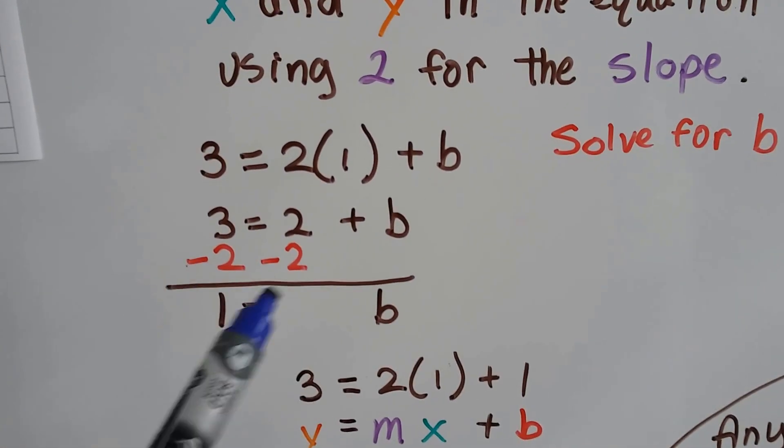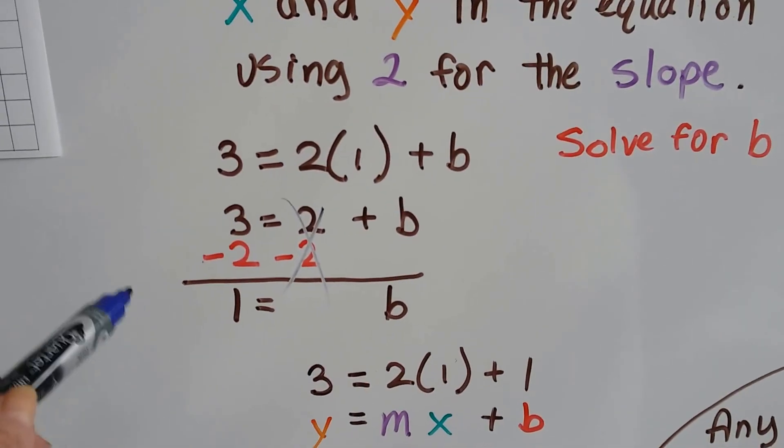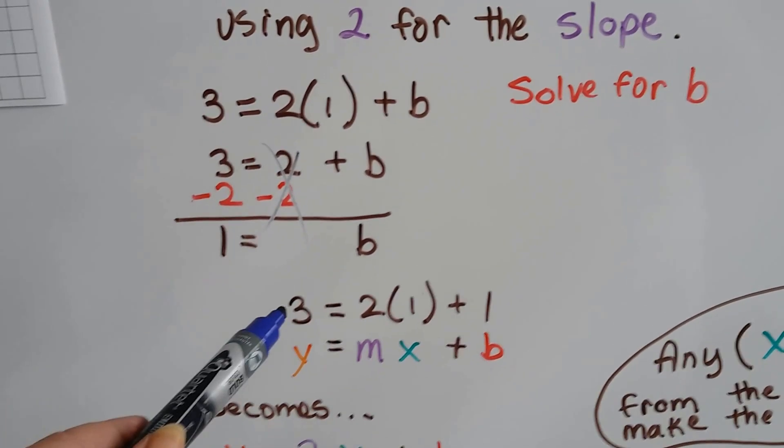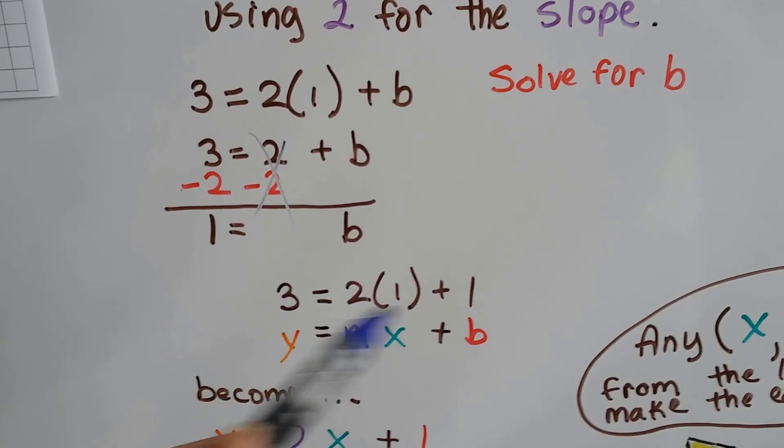And we take 2 away from each side using additive inverse. That gets rid of that 2. And 3 take away 2 is a 1. We know our y-intercept is a 1. So our equation is 3 equals 2 times 1, which is 2, plus 1. That's true.